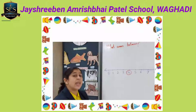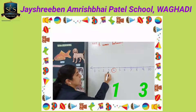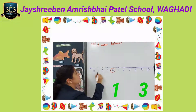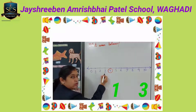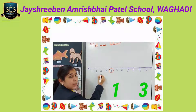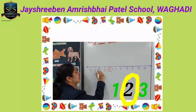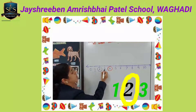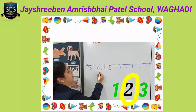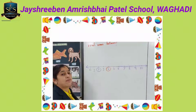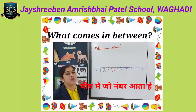Now we are going to see another example. See children, this is number 1 and this is number 3. So which number will come between 1 and 3? We are going to circle number 2 here. 1 aur 3 ke beech mein kaunsa number aega? Number 2. So children, today we have learnt what comes in between. Beech mein jo number aata hai.